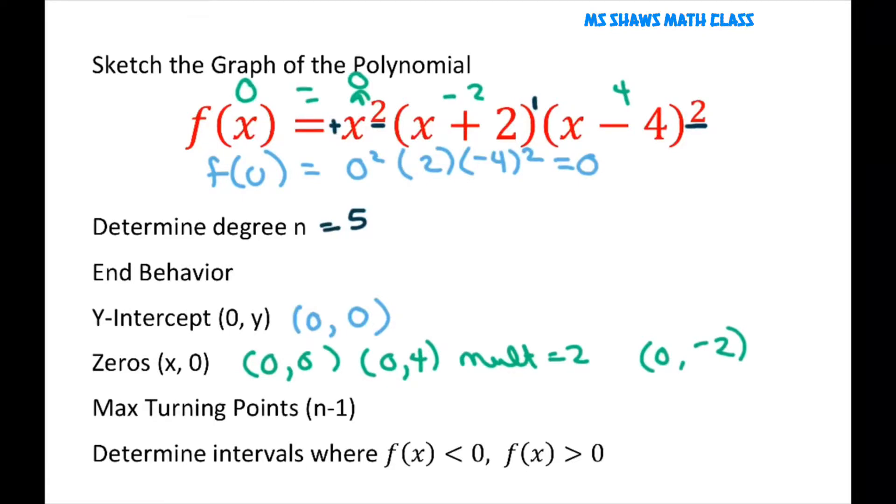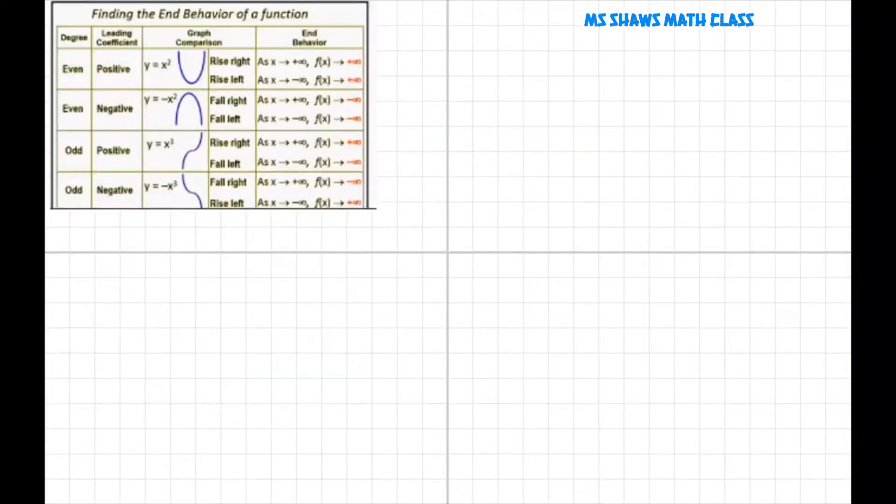Our maximum turning points are going to be n minus 1. So 5 minus 1 equals 4. And we're going to determine the intervals where y is positive and negative on the graph after we graph it. So let's start with the end behavior.